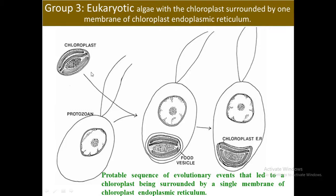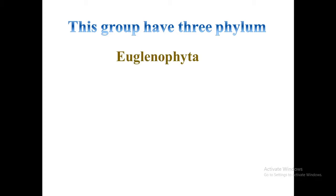We can divide Group 3 into three phyla. First, Euglenophyta or euglenoids, which have chlorophyll A and B, one flagellum with a spiraled row of fibrillar hairs, a proteinous pellicle in stripes under the plasma membrane, and storage product is paramylon with a characteristic type of cell division. Second, Dinophyta or dinoflagellates have a mesokaryotic nucleus and also have chlorophyll A and C as their main pigment. Cells commonly divide into an epicone and a hypocone by a girdle.